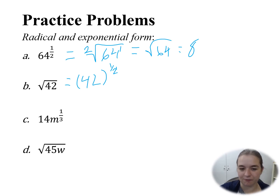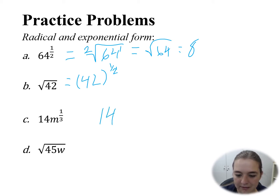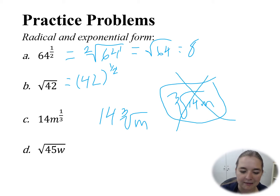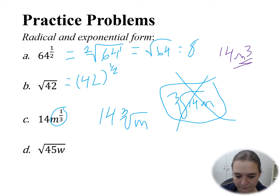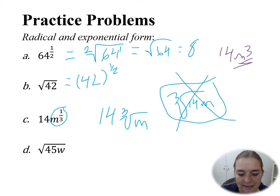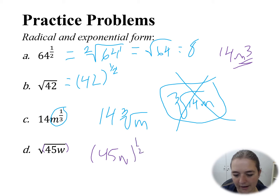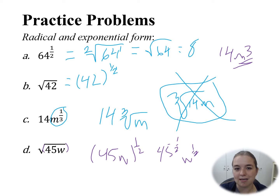For the next one — this is one I've seen different answers for — if I want to transform it from exponential to radical form, I need to figure out what I'm taking the cubed root of. What I see is 14 and the cubed root of m; I do not have the cubed root of 14m. That 1 third only applies to m, just like if I had 14m cubed, that exponent only applies to m. For the last one, if I'm taking the square root of 45w, underneath that radical sign is a grouping symbol — they're all grouped together — so this would be 45w to the power of 1 half. Using exponent rules, I could split this into 45 to the power of 1 half times w to the power of 1 half.